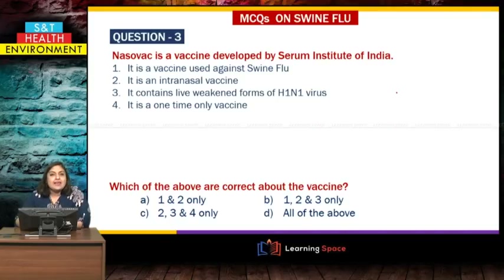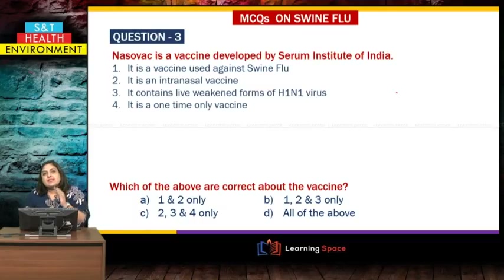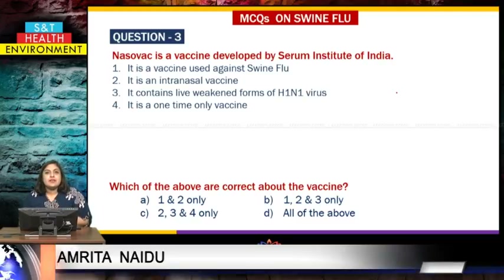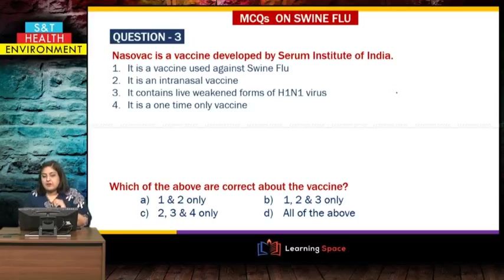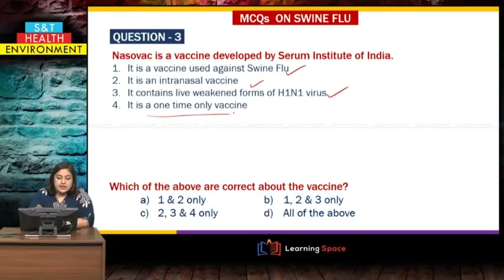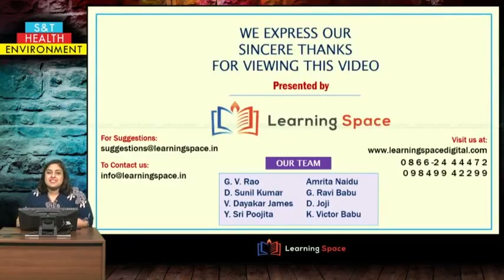Question 3: Nasovac is a vaccine developed by the Serum Institute of India. Which statements are true? Statement 1: It is a vaccine used against swine flu — true. Statement 2: It is an intranasal vaccine pushed into the nose — true. Statement 3: It contains live weakened forms of H1N1 virus — true. Statement 4: It is a one-time only vaccine — false, because vaccines against swine flu need to be given within a year and reboosted. So the correct answer is statements 1, 2, and 3. Thus we come to the end of the module. For such interesting topics, please stay tuned with Learning Space.